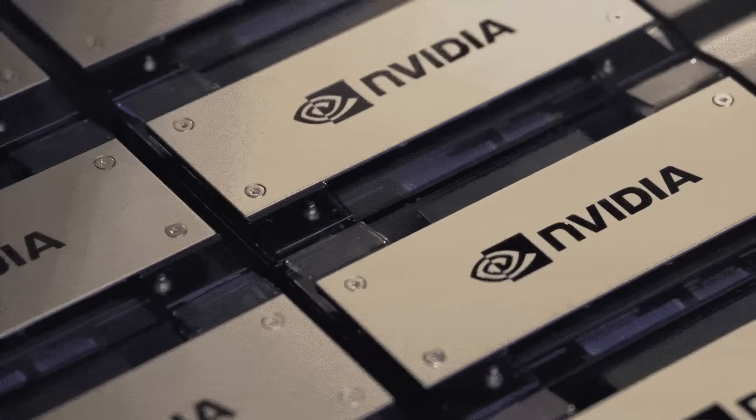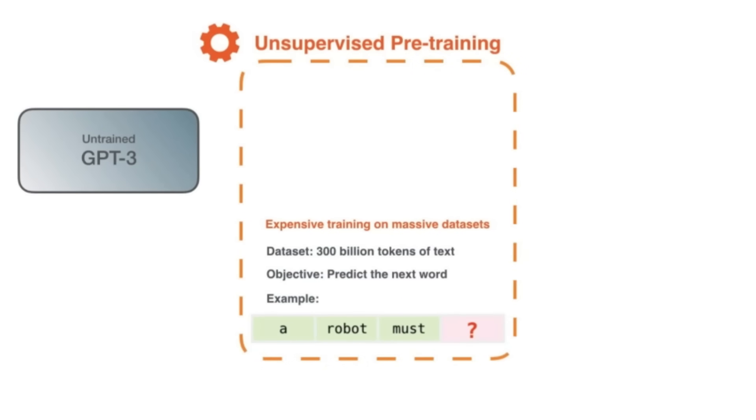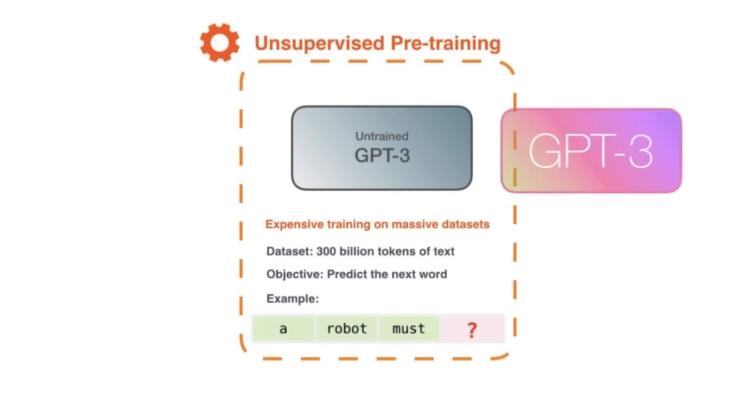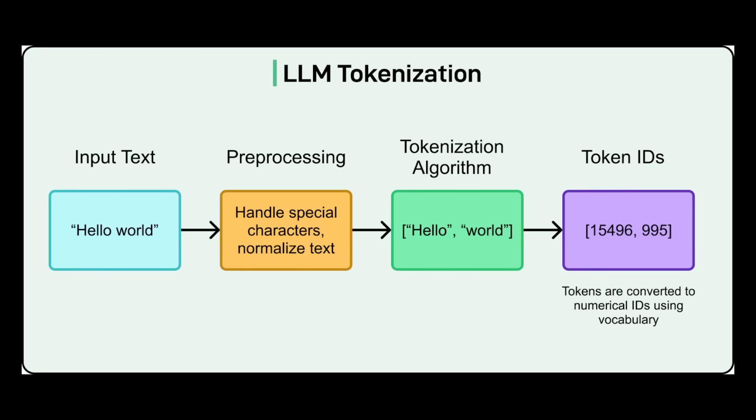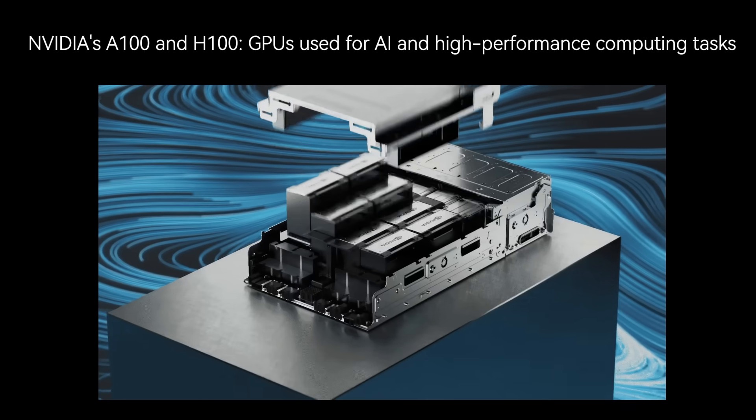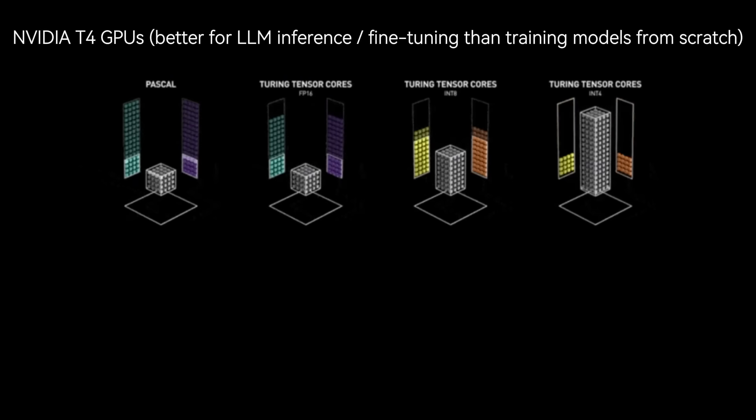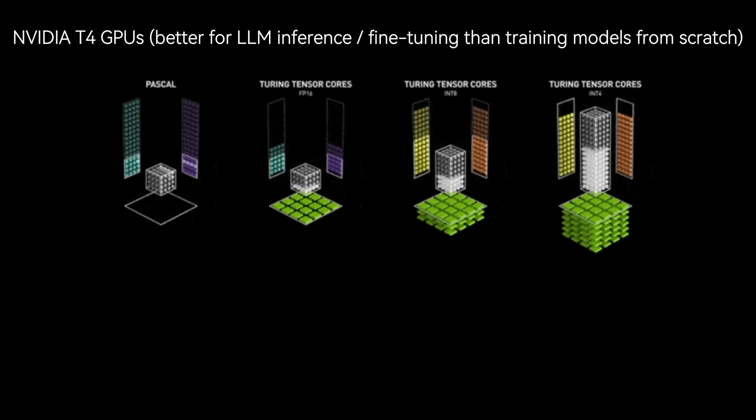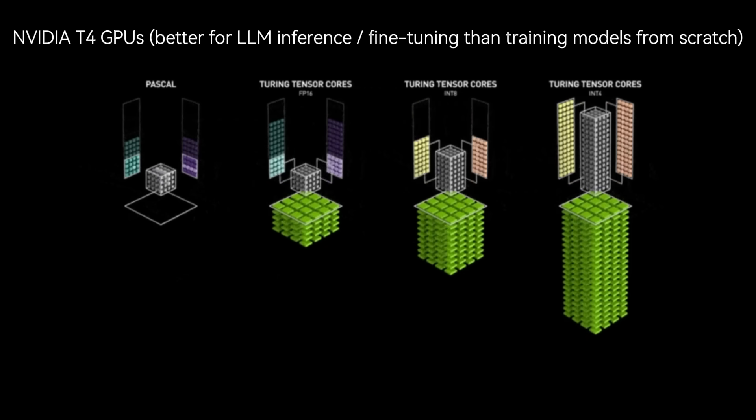So why not train from scratch? At first glance, it might seem easier to just train a language model from scratch instead of fine-tuning an existing one. However, modern state-of-the-art models highlight why this is impractical. Take Llama 3, which has 70 billion parameters. Training a model of this size from scratch requires trillions of tokens, on the order of 15 to 20 trillion, and massive computational budgets, often thousands of A100 or H100 GPUs running for weeks or months. Meta themselves disclosed that training Llama 2 and 3 cost tens of millions of dollars in compute alone, not including the effort of dataset curation, infrastructure engineering, and evaluation pipelines.